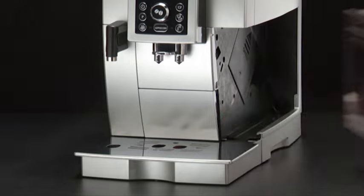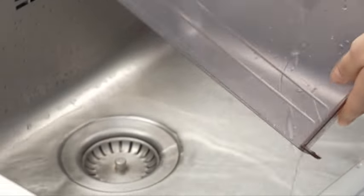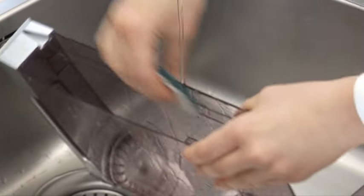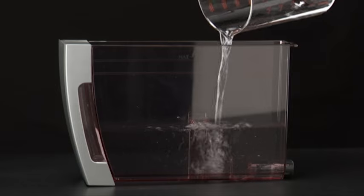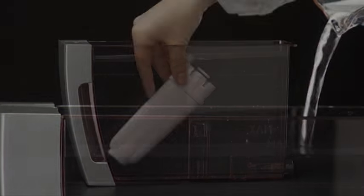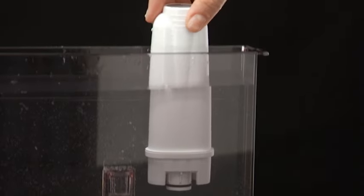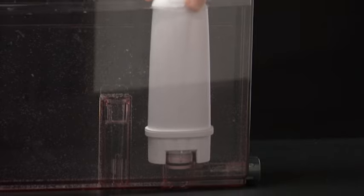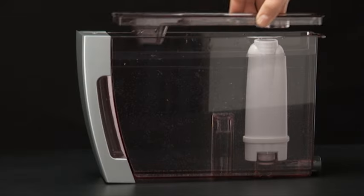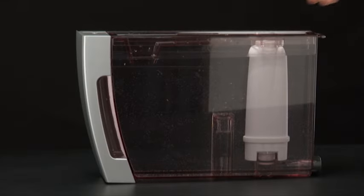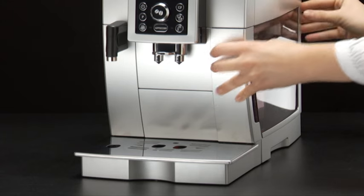Extract the water tank empty, rinse under running water, fill with clean water up to the max level, insert the filter if removed previously, and put the water tank back in the machine.